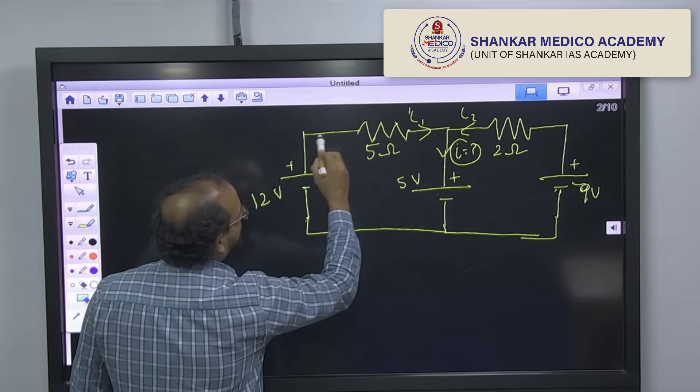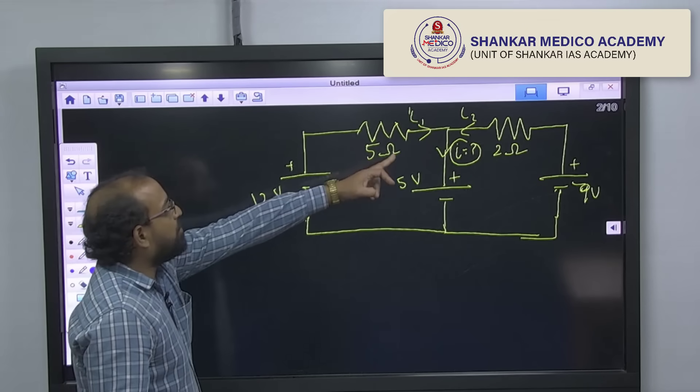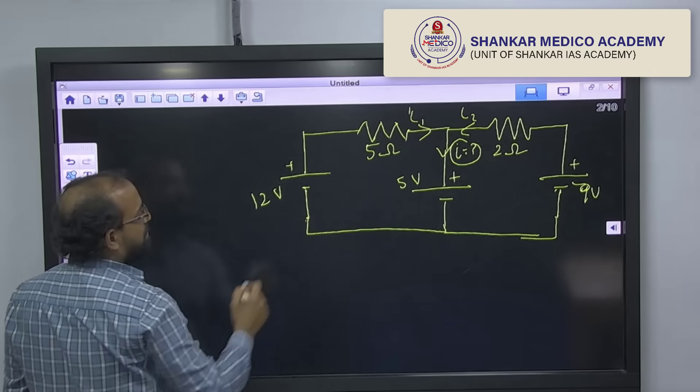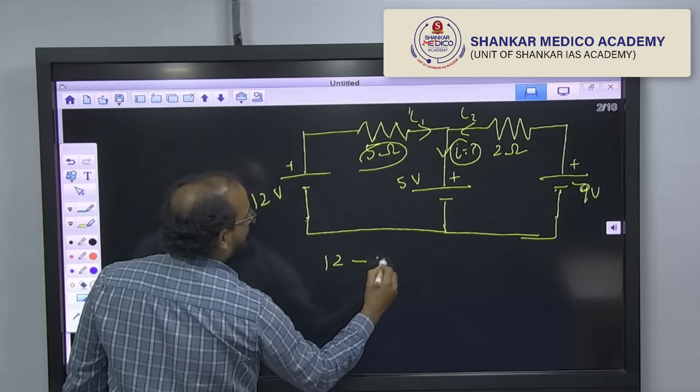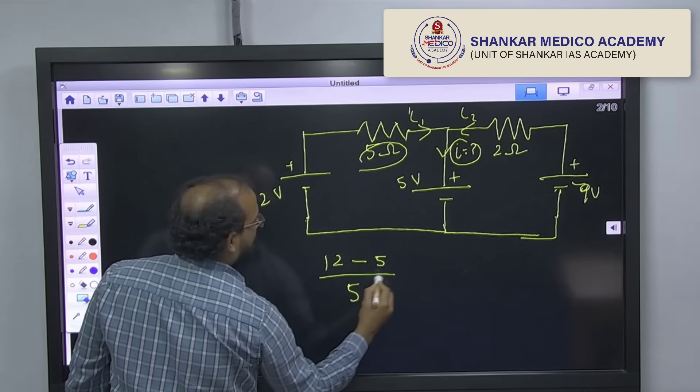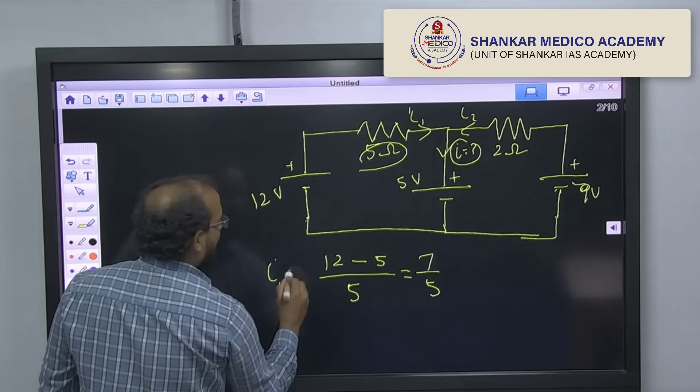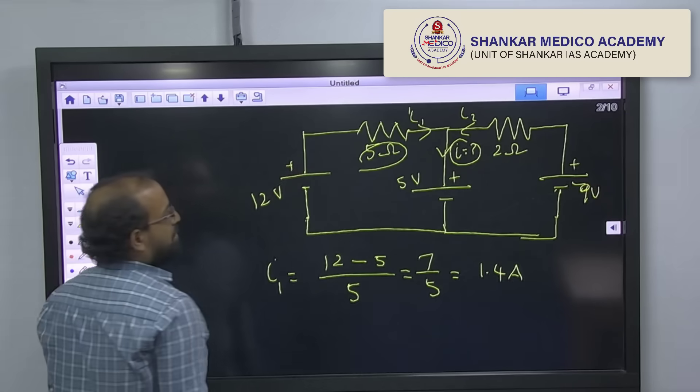Current I1 is nothing but current flowing through this resistor. So, current flowing through this 5 ohm resistor is voltage difference by this resistor. That means 12 minus 5 by 5, 7 by 5. So, this current I1 is equal to 1.4 ampere.